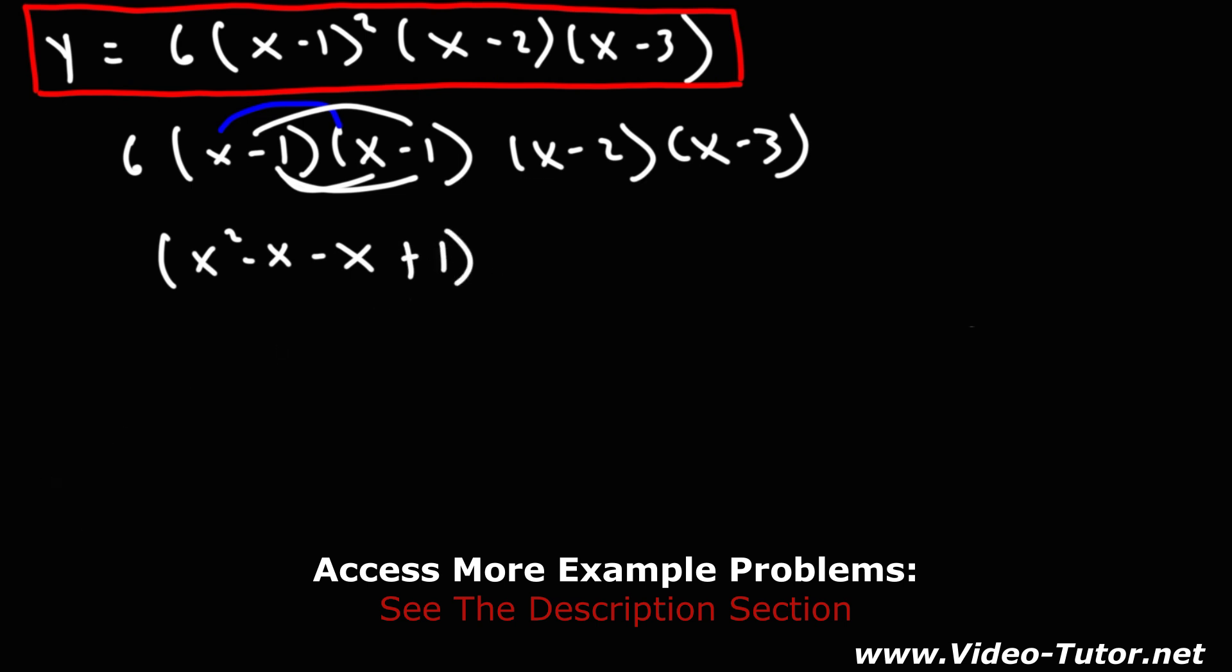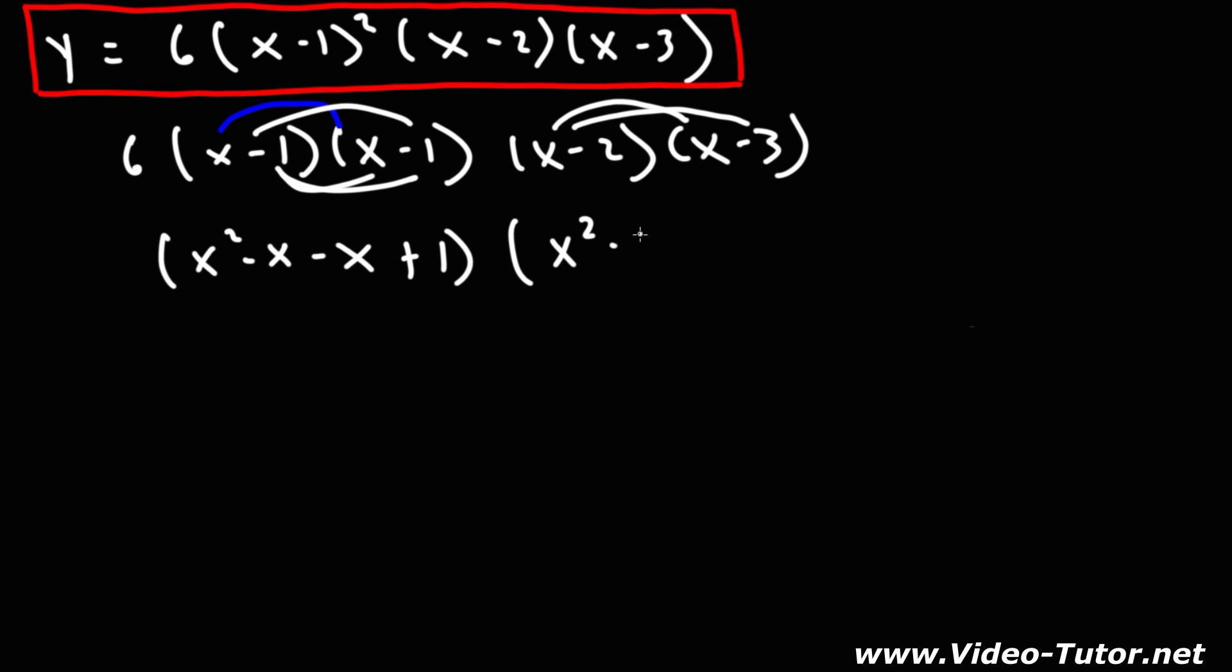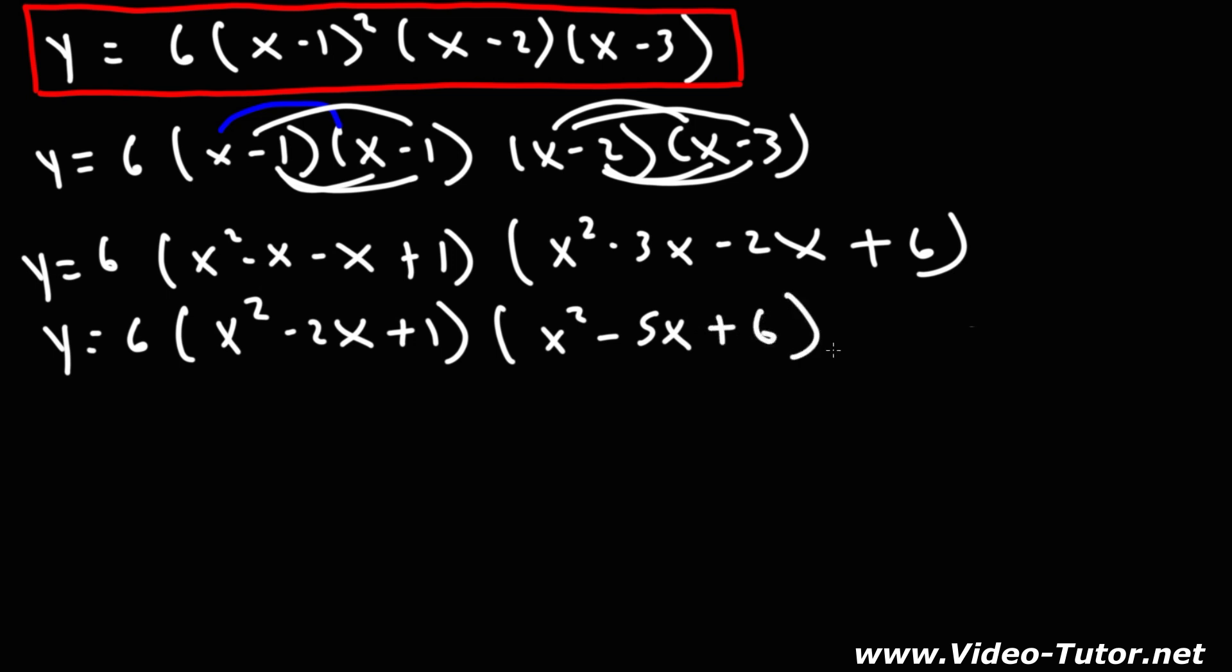Now let's FOIL the remaining two factors. So we're going to have x squared, this is going to be negative 3x, and then negative 2x, negative 2 times negative 3 is positive 6. Now let's simplify. Negative x minus x is negative 2x, and negative 3x minus 2x is negative 5x.